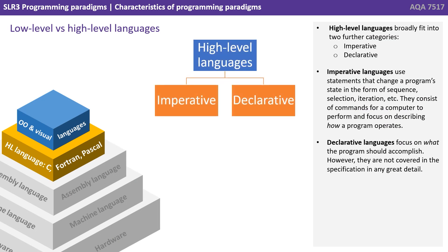High level languages broadly fit into two further categories: imperative and declarative. Imperative languages use statements that change a program's state in the form of sequence, selection, iteration, etc. They consist of commands for a computer to perform and focus on describing how a program operates. Declarative languages, on the other hand, focus on what the program should accomplish. However, they're not covered in any great detail in the specification.